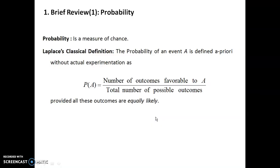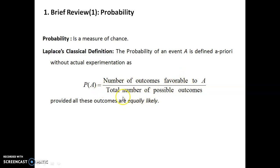Probability is the measure of chance. According to the Laplace classical definition, the probability of an event is defined a priori without actual experimentation as: probability of A equals number of outcomes favourable to A divided by total number of possible outcomes.